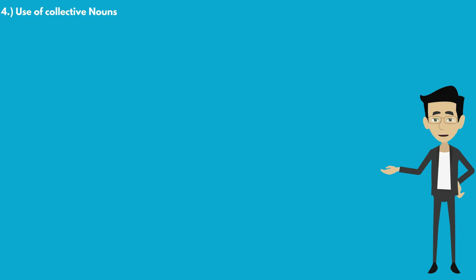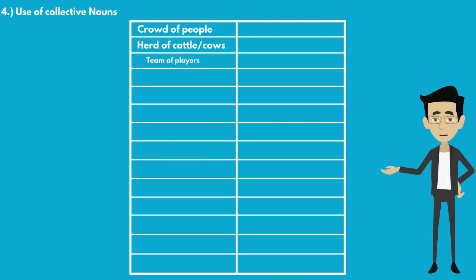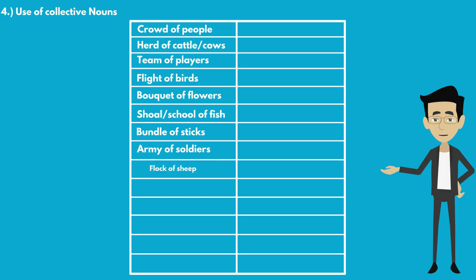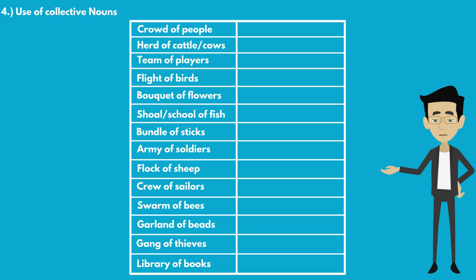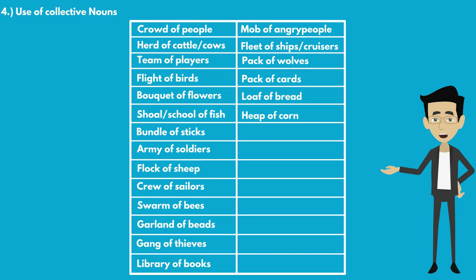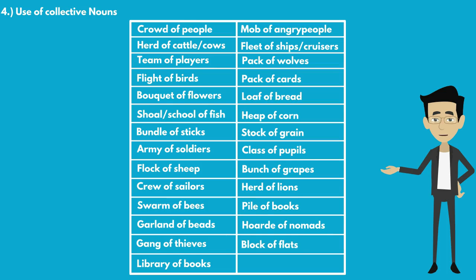The fourth rule covers the use of collective nouns: crowd of people, herd of cattle or cows, team of players, flight of birds, bouquet of flowers, shoal or school of fish, bundle of sticks, army of soldiers, flock of sheep, crew of sailors, swarm of bees, garland of beads, gang of thieves, library of books, mob of angry people, fleet of ships or cruisers, pack of wolves, loaf of bread, heap of corn, stock of grain, class of pupils, bunch of grapes, herd of lions, pile of books, hoard of nomads, block of flats, file of papers.